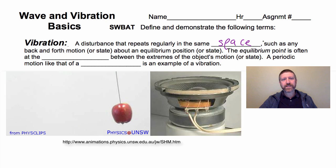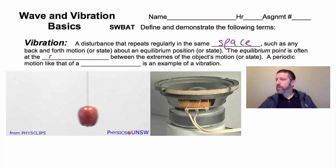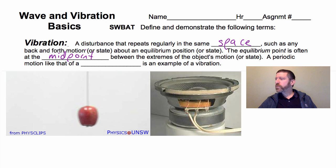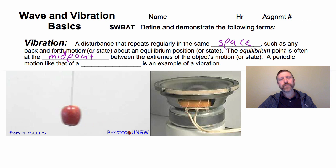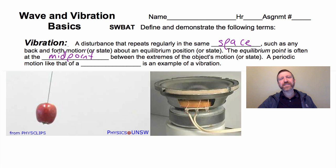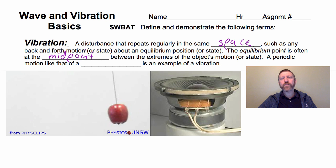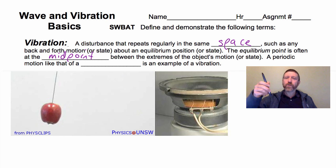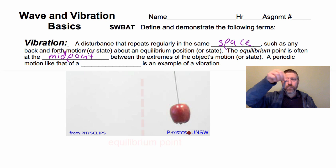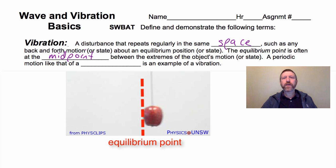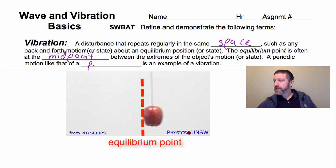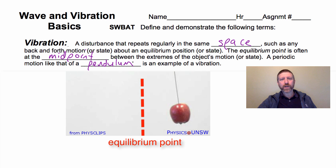The equilibrium point is often at the middle or midpoint between two extremes of the object's motion or state. For example, the equilibrium point for a sound wave is atmospheric pressure. If I have a pendulum going back and forth, the equilibrium point is just the middle right there. A periodic motion like that of a pendulum is an example of a vibration.